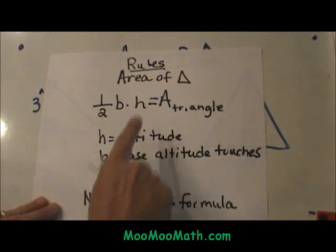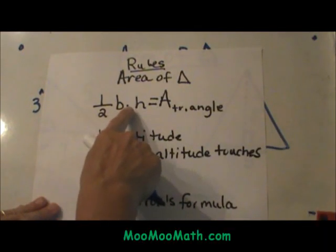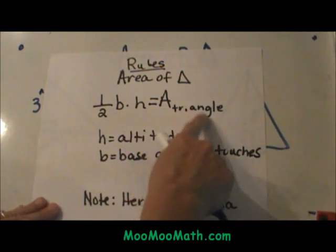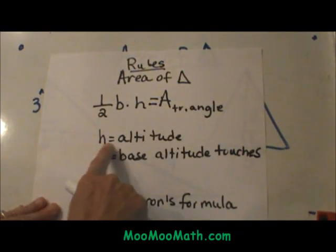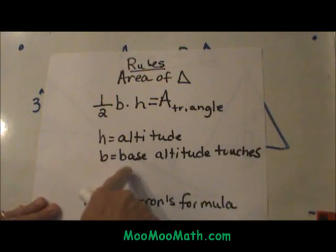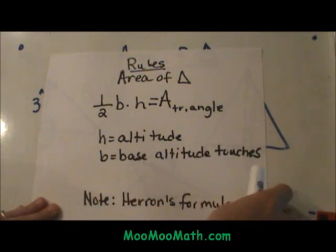So let's look at the formula. The area of a triangle is just one half the base times the height. That represents the area of a triangle. H is our height. The height in this case is an altitude drawn from the peak down to a base. The base is the reference side that the altitude touches.